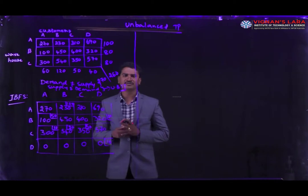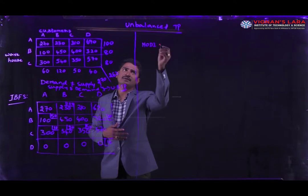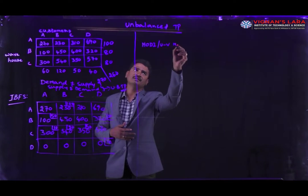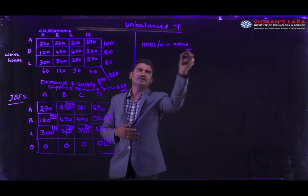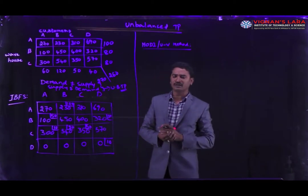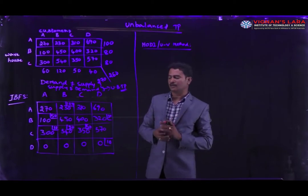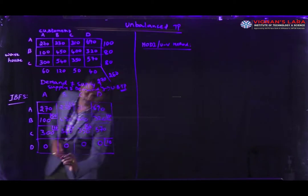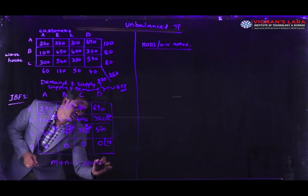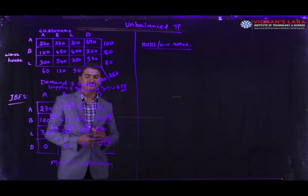I would like to use the modified distribution method for solving this problem. It is also called the MODI method, or it is also called the UV method. Before we calculate the optimal solution, we have to check whether the problem is in degeneracy or non-degeneracy using the formula M plus N minus 1 equals allocations. If it is equal to allocations, it is non-degeneracy; otherwise, it is in degeneracy.